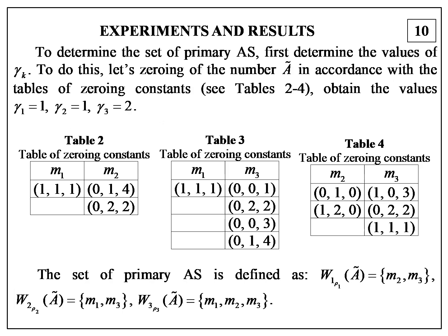To determine the set of primary alternative sets, first determine the values of the zeroing constants. To do this, zero the number a in accordance with the tables of zeroing constants — see Tables 2, 3, and 4, range 2 to 4. Obtain the values: gamma 1 equal to 1, gamma 2 equal to 1, gamma 3 equal to 2.